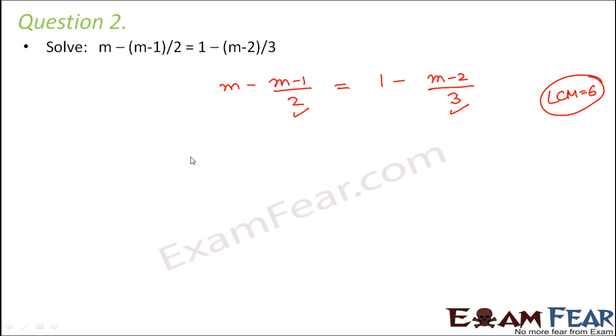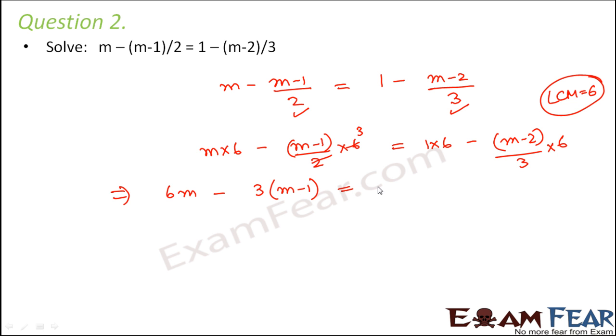So now we multiply both sides by 6. So m×6 - (m-1)/2×6 = 1×6 - (m-2)/3×6. So therefore what do we get? We get 6m - 2, 3 into 6. So this would be 3(m-1) is equal to 6 - 3, 2 into 6. So this would be 2 into (m-2).